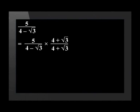We don't want to change the value of the fraction, so we multiply both the numerator and the denominator by 4 plus the square root of 3.